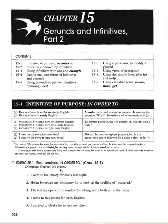The phrase 'be used for' expresses the typical or general purpose of a thing; the preposition 'for' is followed by a gerund. Example: 'A saw is used for cutting wood.' Also possible: 'A saw is used to cut wood.' However, to talk about a particular situation, use 'be used to' plus an infinitive: 'A chain was used to cut down the old oak tree,' not 'for cutting.'